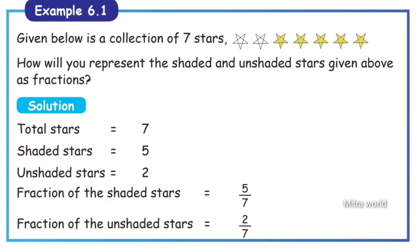Total stars are 7. Shaded stars are 5. Unshaded stars are 2. The fraction of the shaded stars: we put the shaded number on top. Shaded stars are 5, so the fraction is 5 by 7.